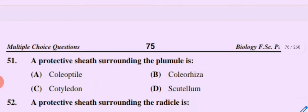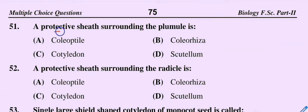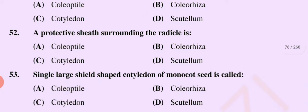Question number 51: A protective sheath surrounding the plumule is called — option A coleoptile, option B coleorhiza, option C cotyledon, option D scutellum. The correct option is option B, coleorhiza. Question number 52: A protective sheath surrounding the radicle is called — option A coleoptile, option B coleorhiza, option C cotyledon, option D scutellum. The correct option is option B, coleorhiza.